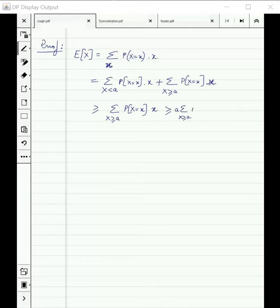This is probability. This is probability that X equals x. So this shows that this quantity summation x equals x is nothing but probability. So this implies that probability X greater than a is less than expected value of X divided by a.